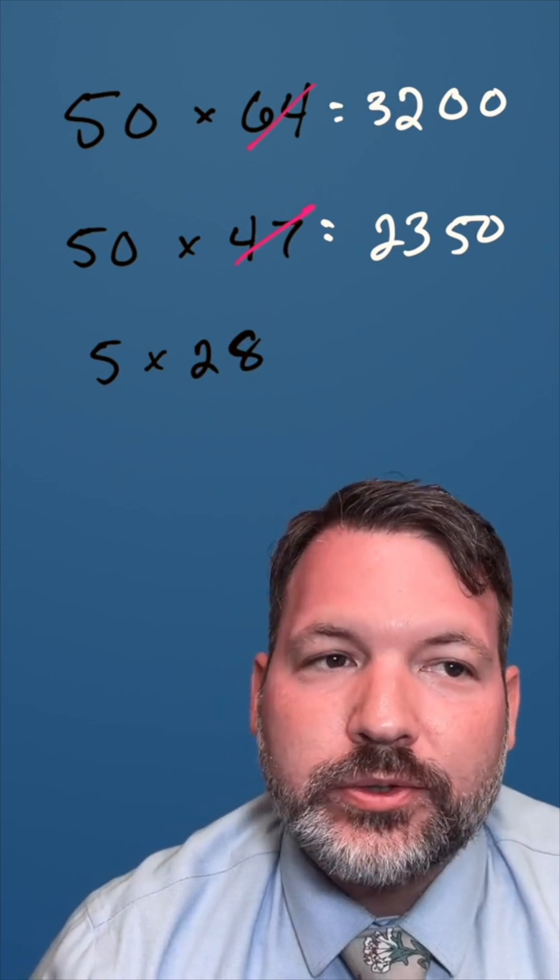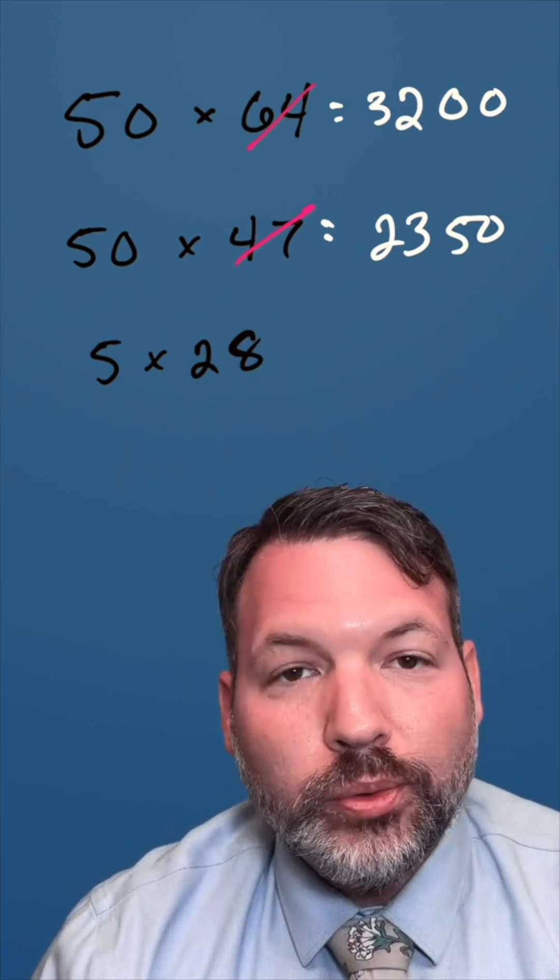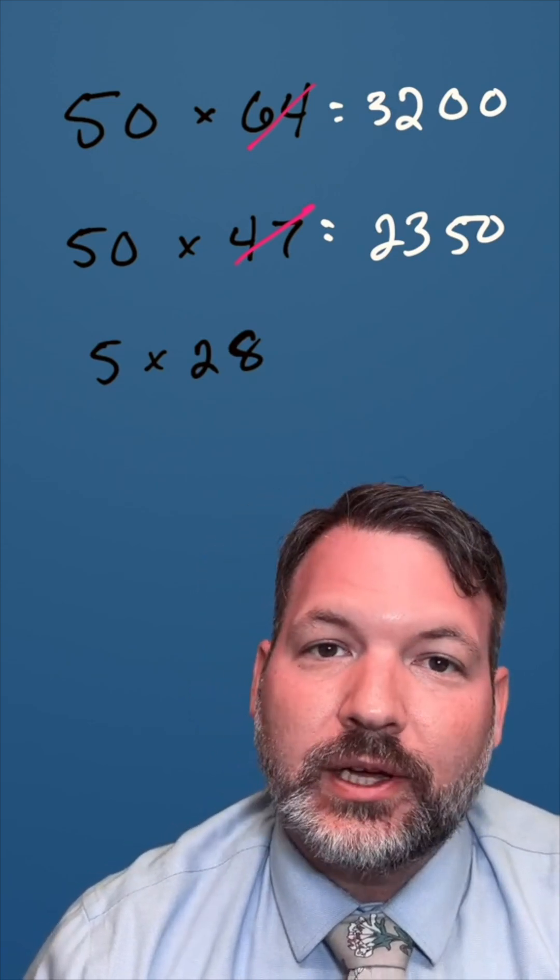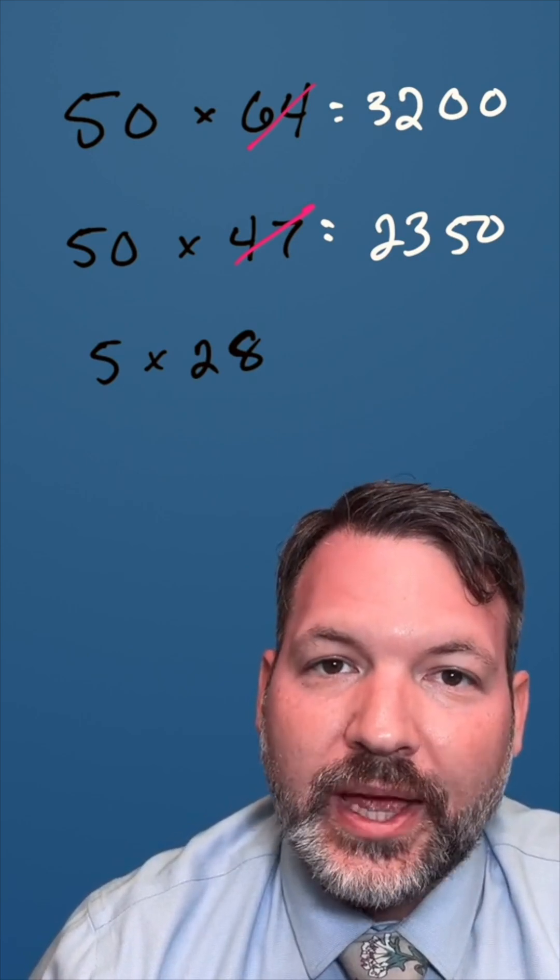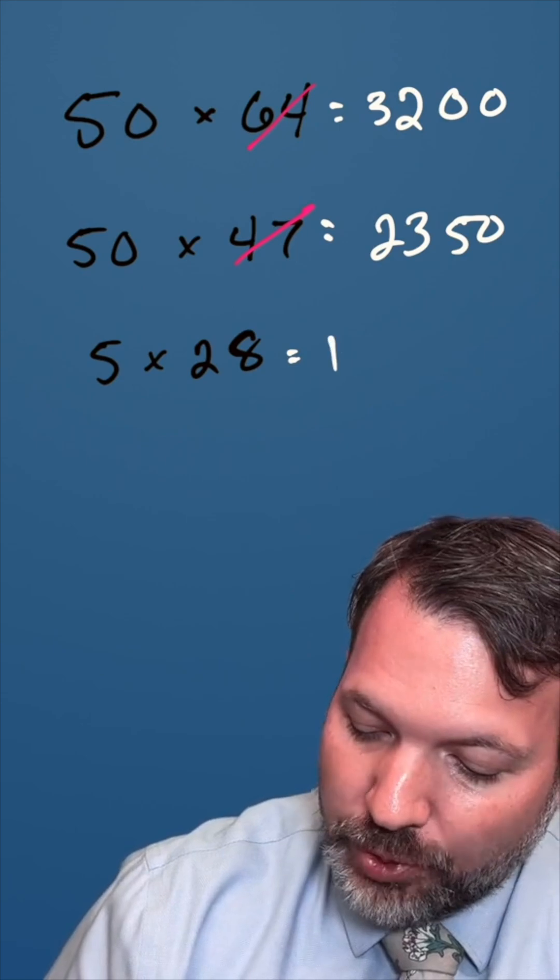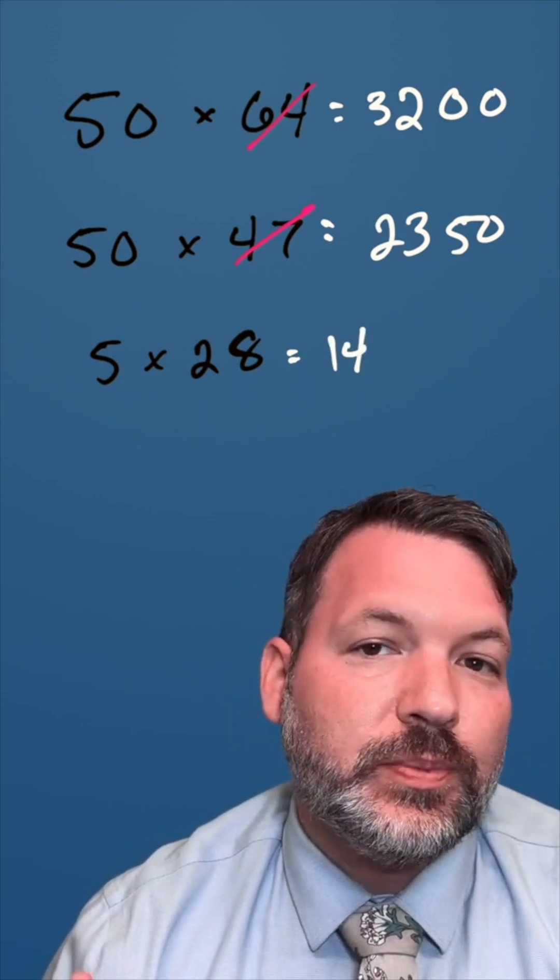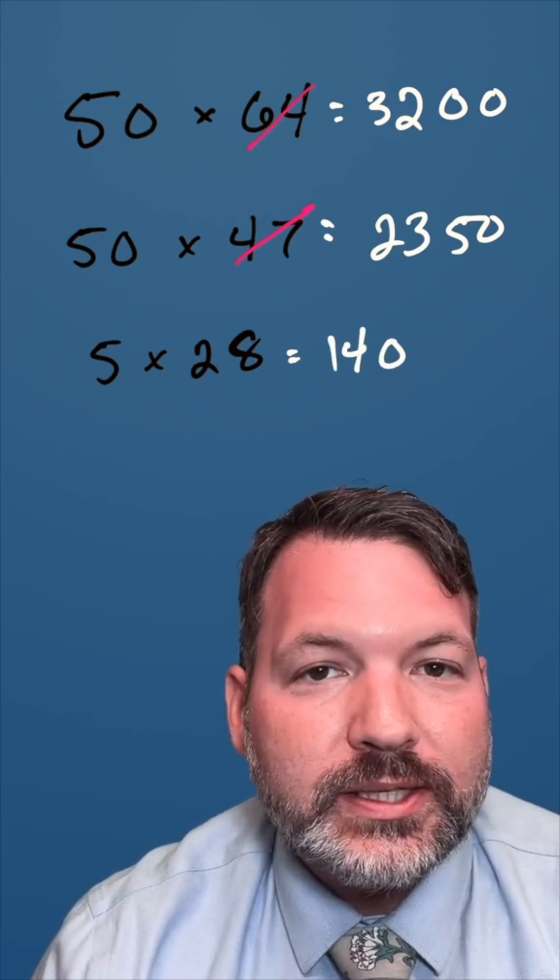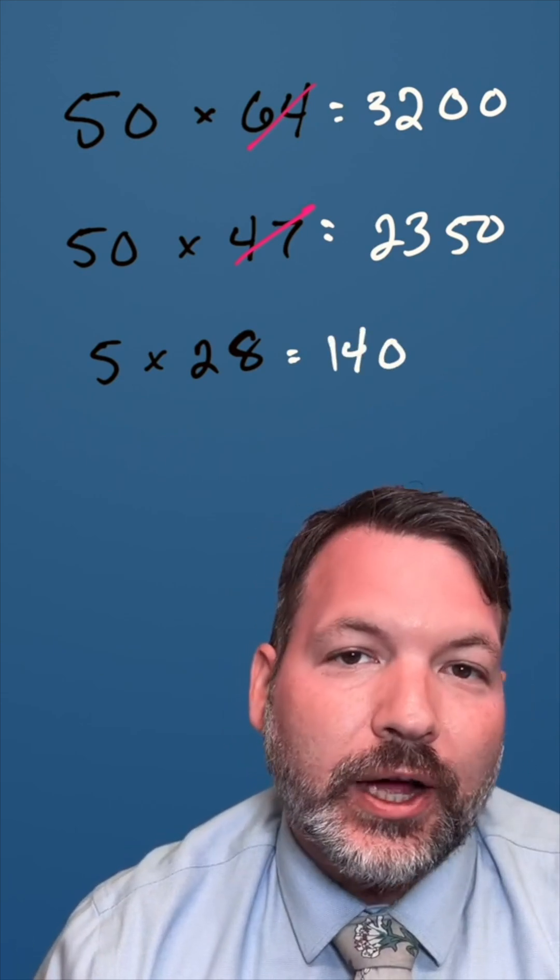One of the things I love about this trick is how extendable it is. It doesn't only work for 50, although of course that's the closest analogy to 50%. It also works for things like 5. 5 times 28. Take half of 28, that's 14. And in this case, because it's 5, we're going to write one zero down. 5 times 28 is 140.